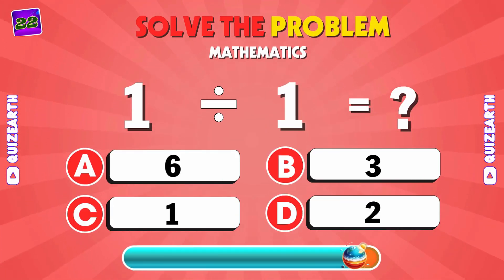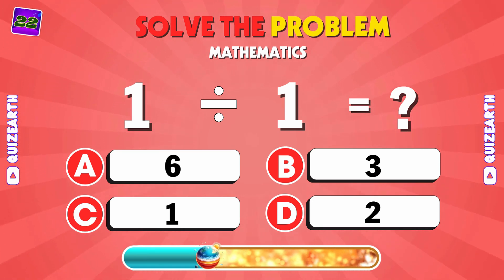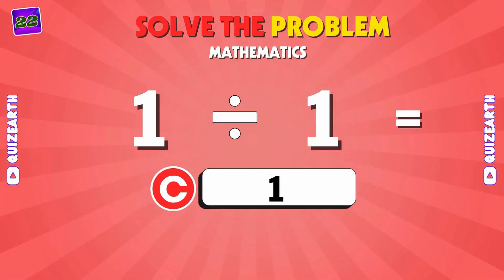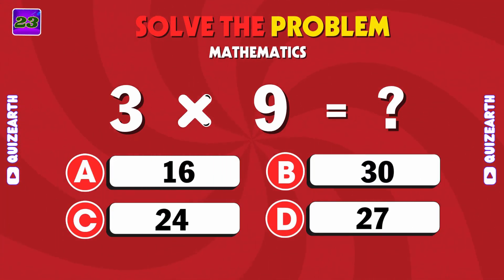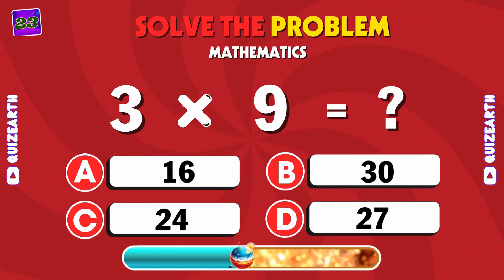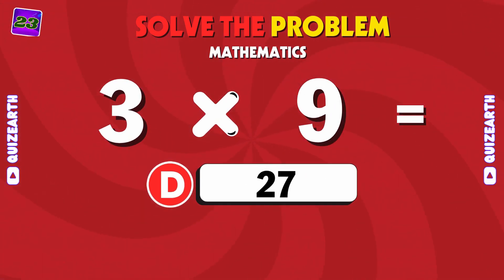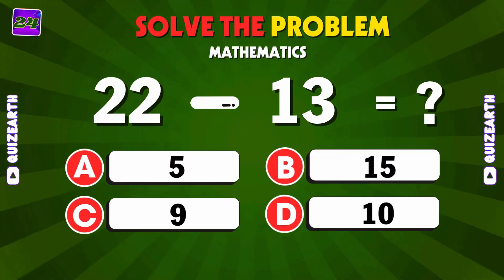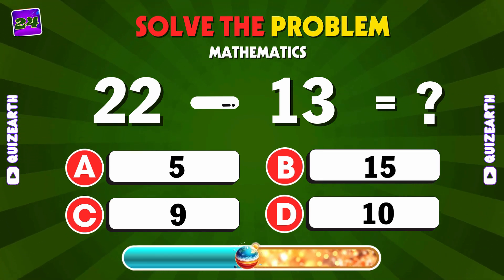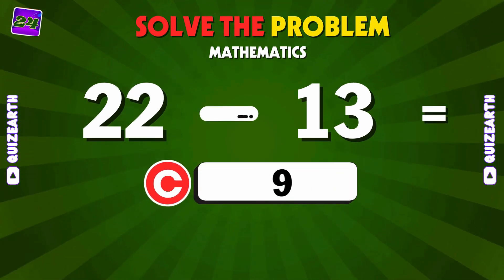Let's start easy. What is 1 divided by 1? C: 1. Get ready for some multiplication. What is 3 times 9? D: 27. Next up, we have 22 minus 13. Let's see if you can get the right answer. C: 9.